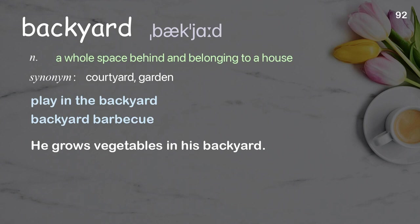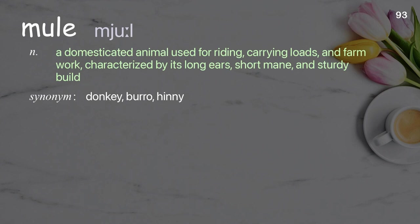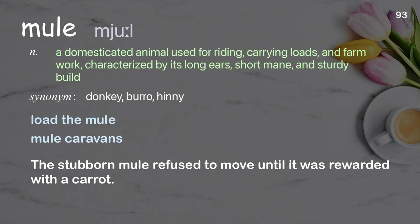Mule: a domesticated animal used for riding, carrying loads, and farm work, characterized by its long ears, short mane, and sturdy build. Examples: load the mule, mule caravans. The stubborn mule refused to move until it was rewarded with a carrot.